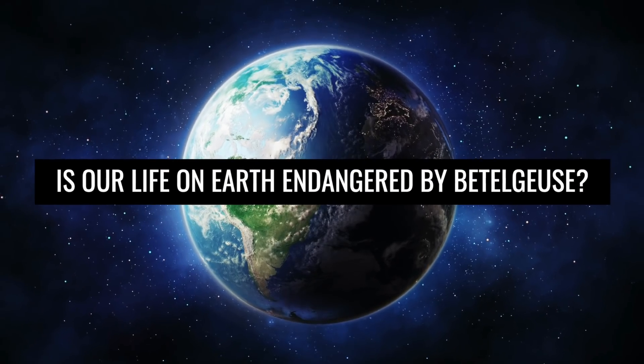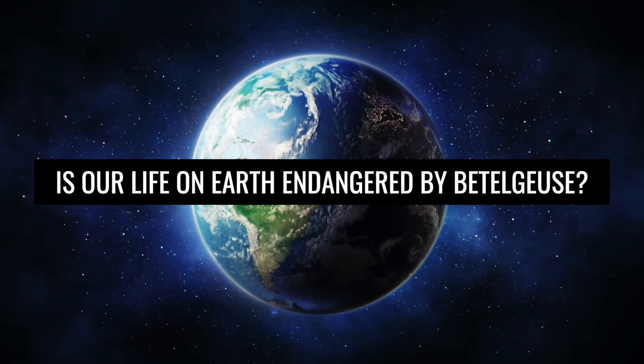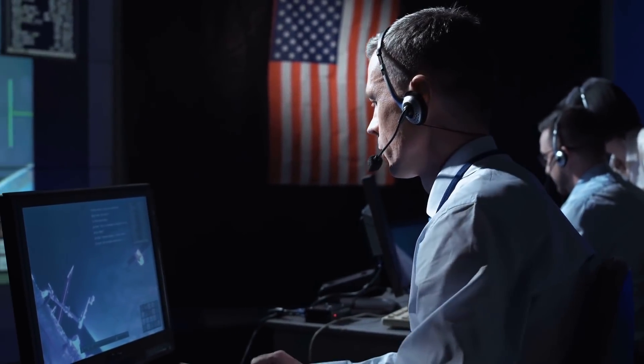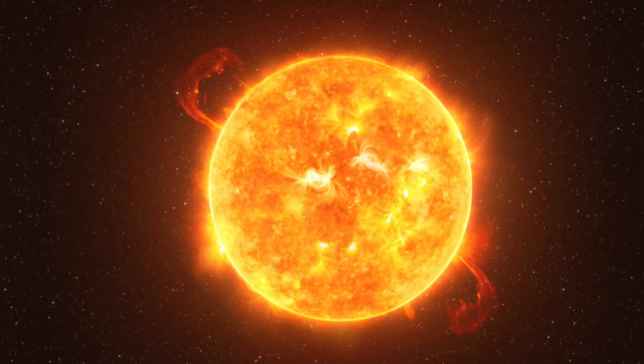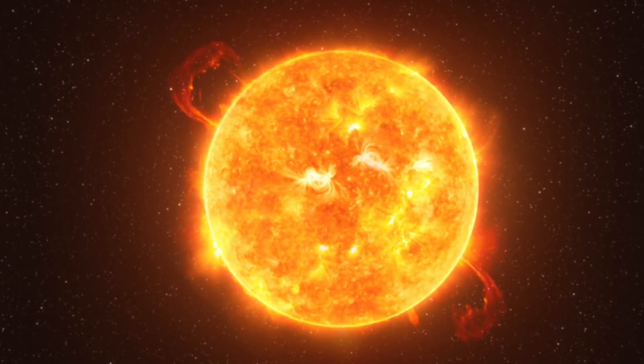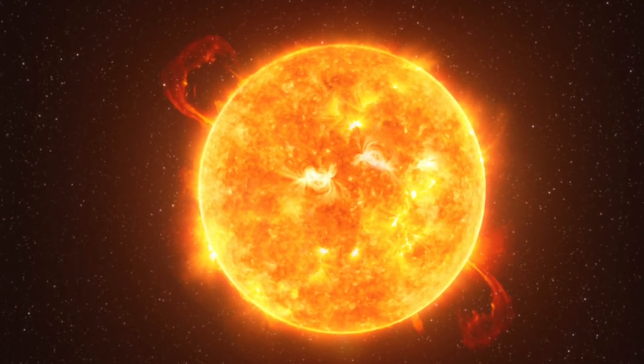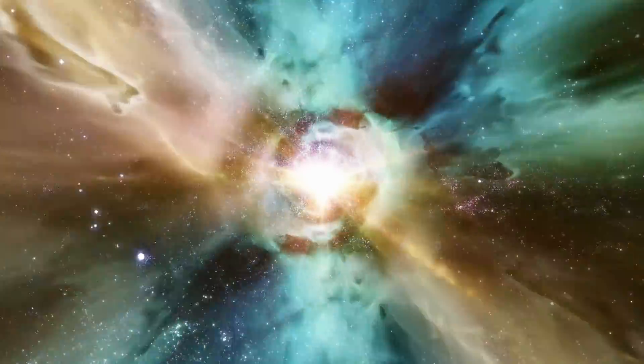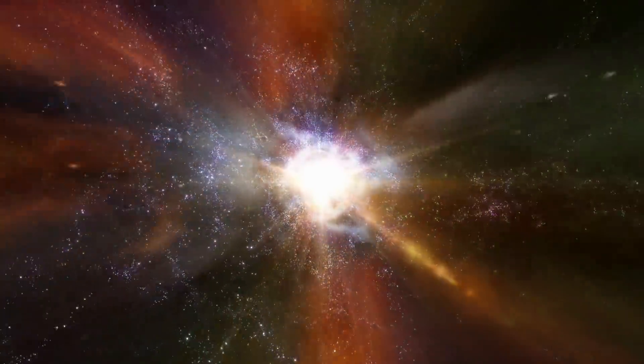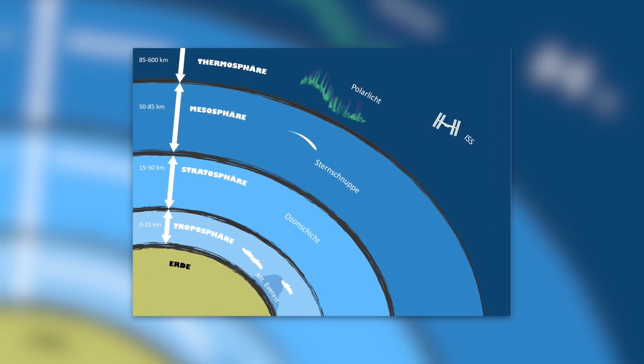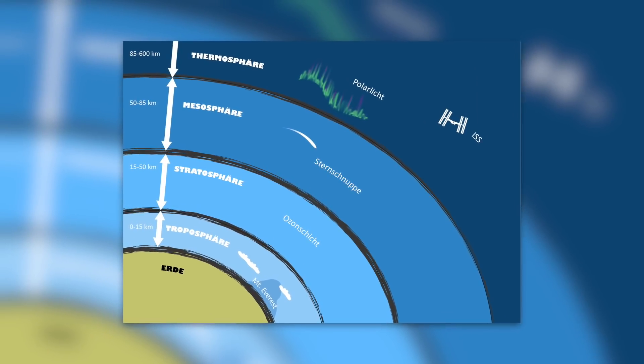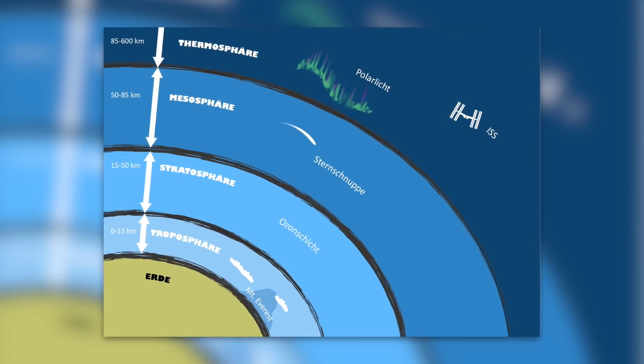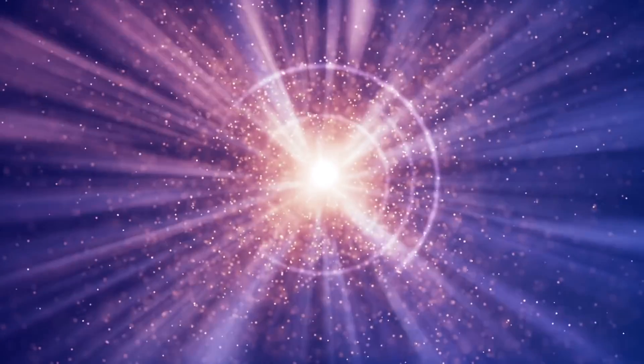Is our life on Earth endangered by Betelgeuse? According to experts, we're safe. Whenever the star explodes, the lethal radiation will scatter to such an extent that only a weak portion will reach us. A supernova would have to occur within a few dozen light years to really harm us. Some scientists believe that the UV layer of the Earth could change for a time due to the neutrinos and gravitational waves.